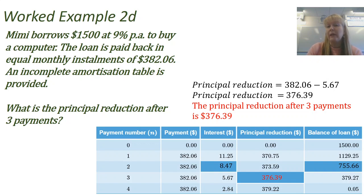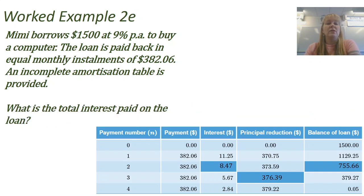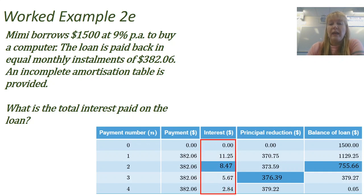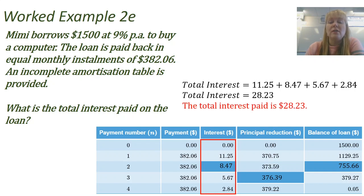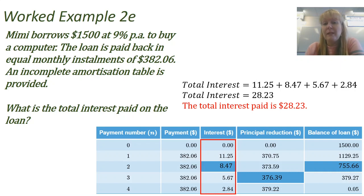We've now filled out the amortization table. Question E asks for the total interest paid over the whole loan. We add all of the interest components together, and the total comes to $28.23 across the whole loan — which is actually not a lot, but Mimi paid it back in just four months, so not bad.